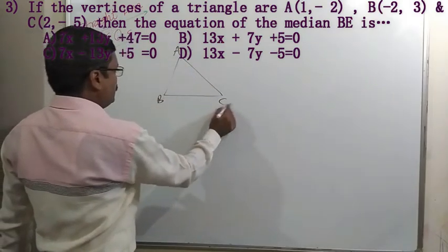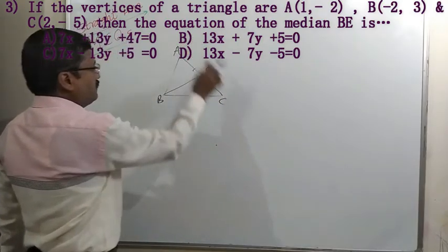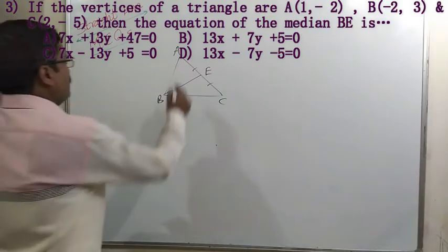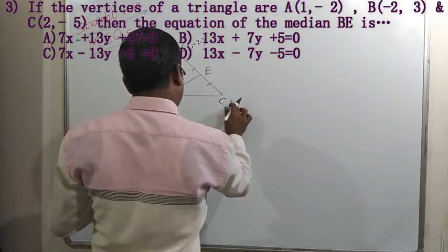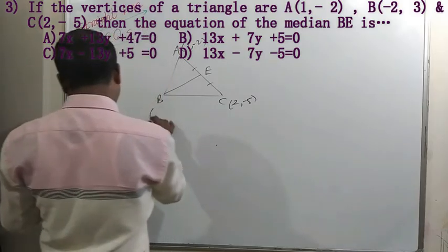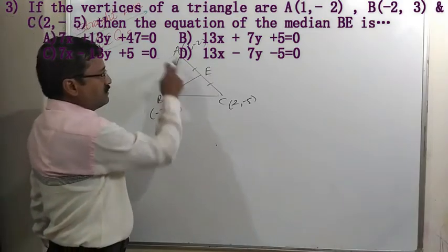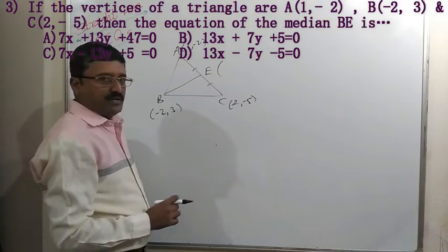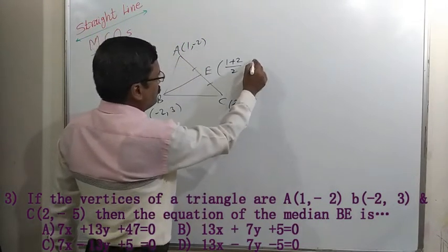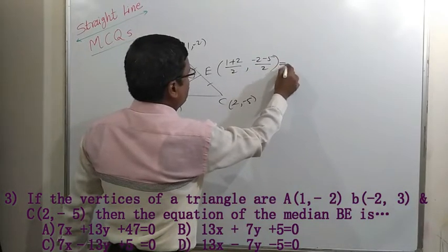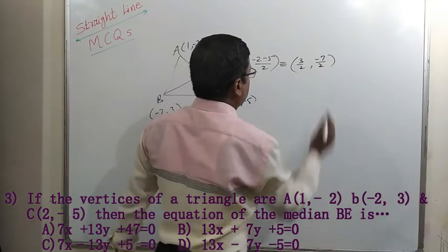In example 3, vertices A(1, -2), B(-2, 3), and C(2, -5) of a triangle are given. We have to find the equation of median BE, where E is the midpoint of side AC. Using the midpoint formula, E = ((1+2)/2, (-2-5)/2) = (3/2, -7/2).